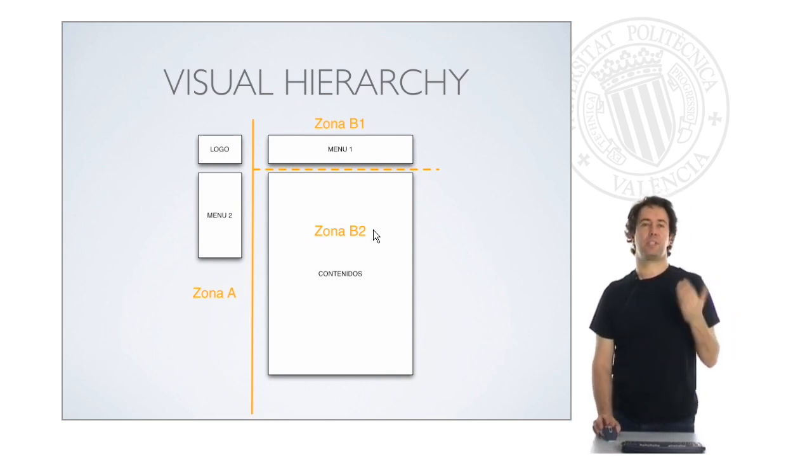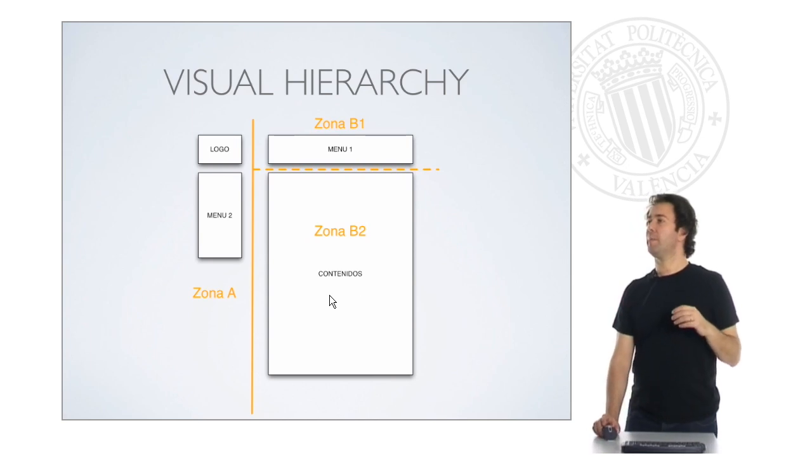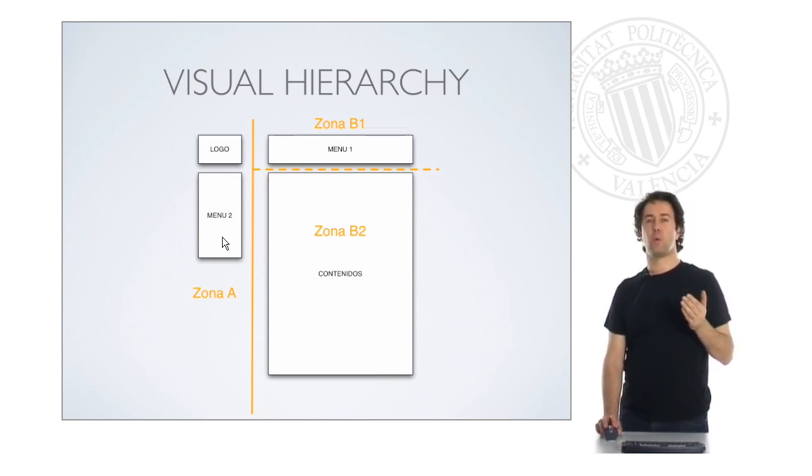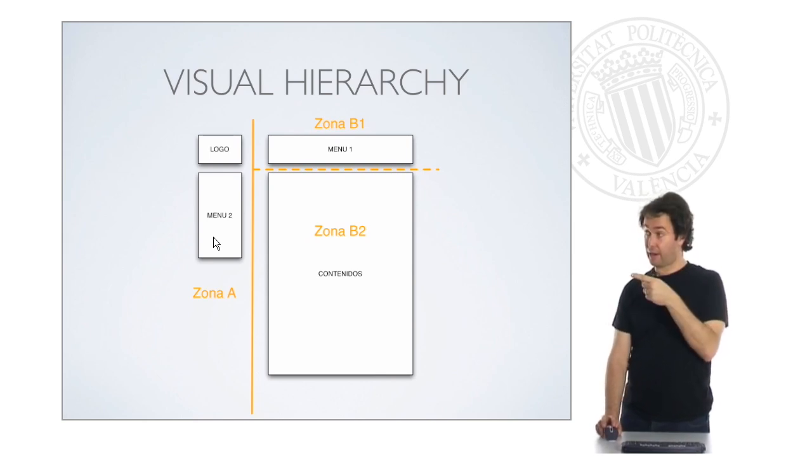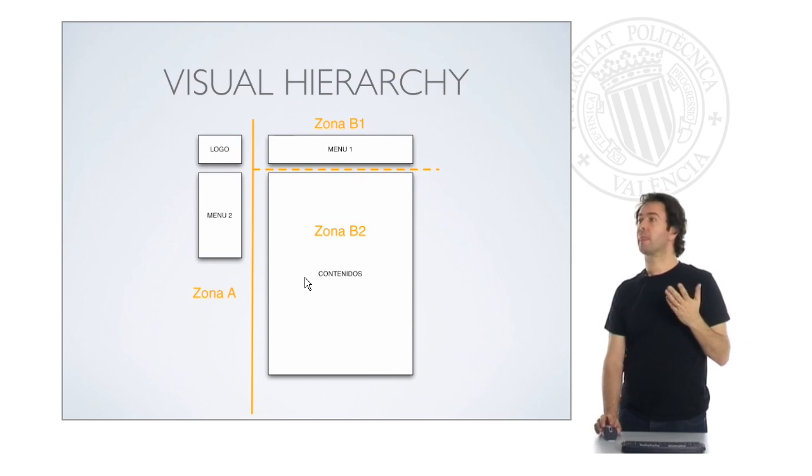If I put a link here on this menu, everyone would expect that if I click there, all this area can change. That would be an expected behavior. And, if I click on menu 1, I would expect that the contents may change. But, I would not expect, if I click on menu 1, here somewhere, I would not expect this area to change.